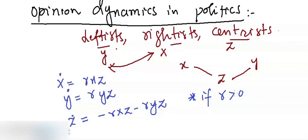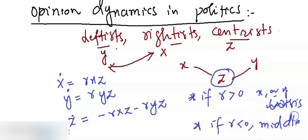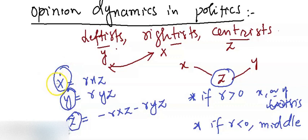If r is positive and a leftist or rightist is convincing z, then x or y wins. If r is negative, then the centrists win and make the extremists become centrists. Here x-dot is the time derivative of the rightist fraction, y-dot is the time derivative of the leftist fraction, and z-dot is how the fraction of centrists is evolving with respect to time.